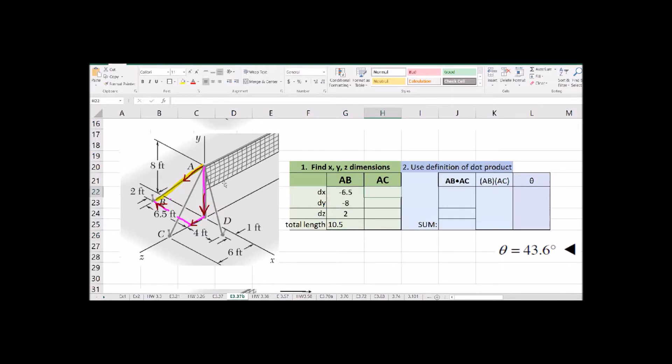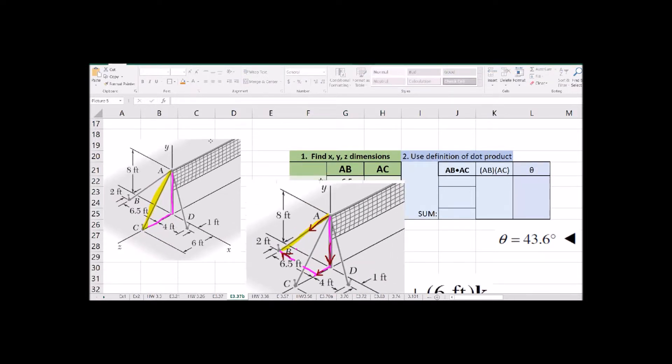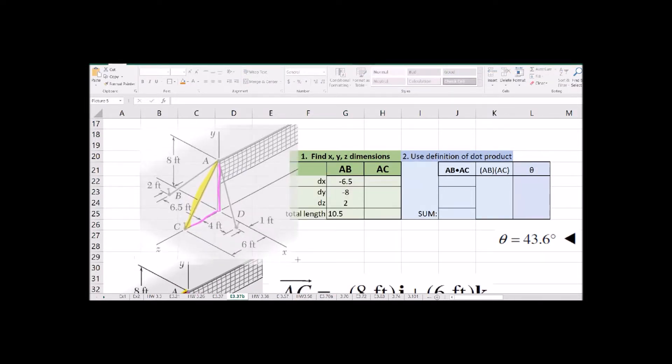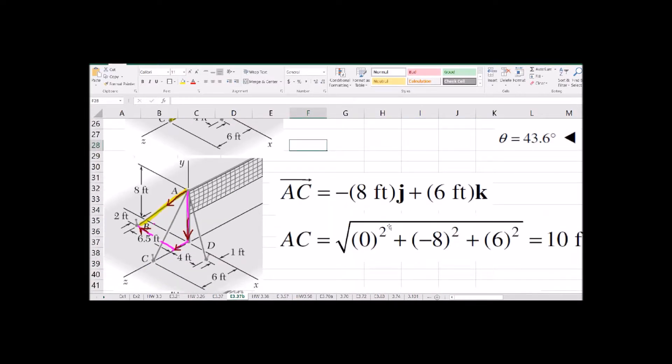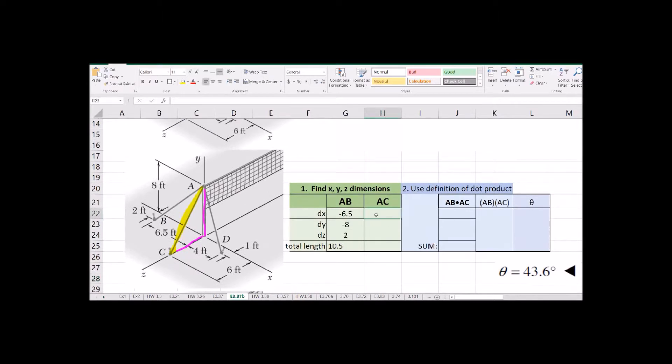This is very similar to getting the unit vectors. So here is our other cable, AC. So make sure you see our I, J, K components for this guy. So nothing in the I direction, going straight down and straight forward, and you can copy over that square root equation for the length.